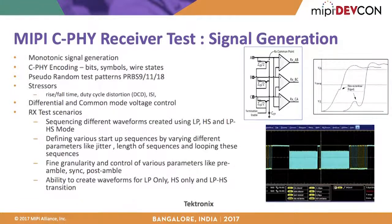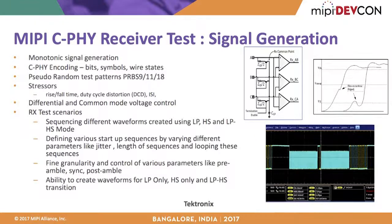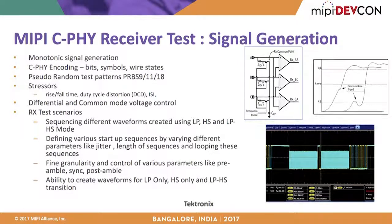Receiver testing is generally more involved than transmitter testing. Key questions include: How complex is the test setup? How easy is it to configure and generate various test scenarios? How precisely can you control various parameters? C-PHY CTS has about 20 different Rx tests, and the test setup must support signal generation for a wide variety of conditions to cover all those tests.